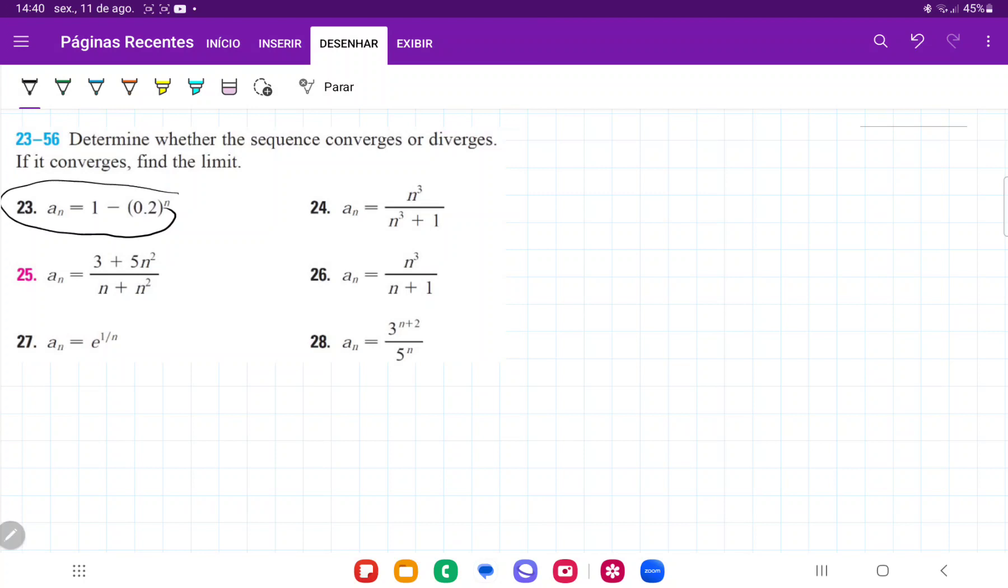And now remember that a_n converges if a_n tends to a limit as n tends to infinity. So we basically have to see if the limit exists here. So a_n is going to be equal to 1 minus 0.2 to the power of n.